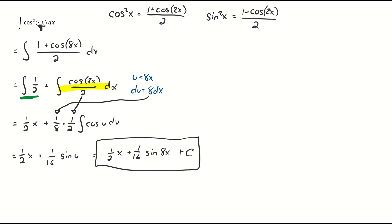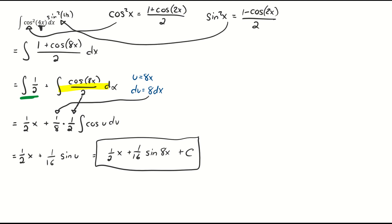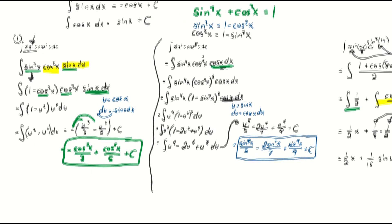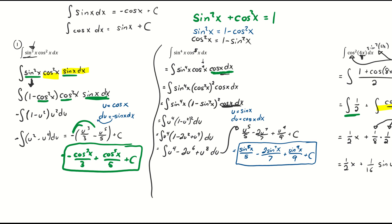So to summarize: if both powers are even, use the power-reducing formulas. If one of the powers is odd, as in our first two problems, we peel off one power, use the Pythagorean identity to convert everything into the other trig function, make the u-substitution, and solve. Thanks for watching, I hope it helped.